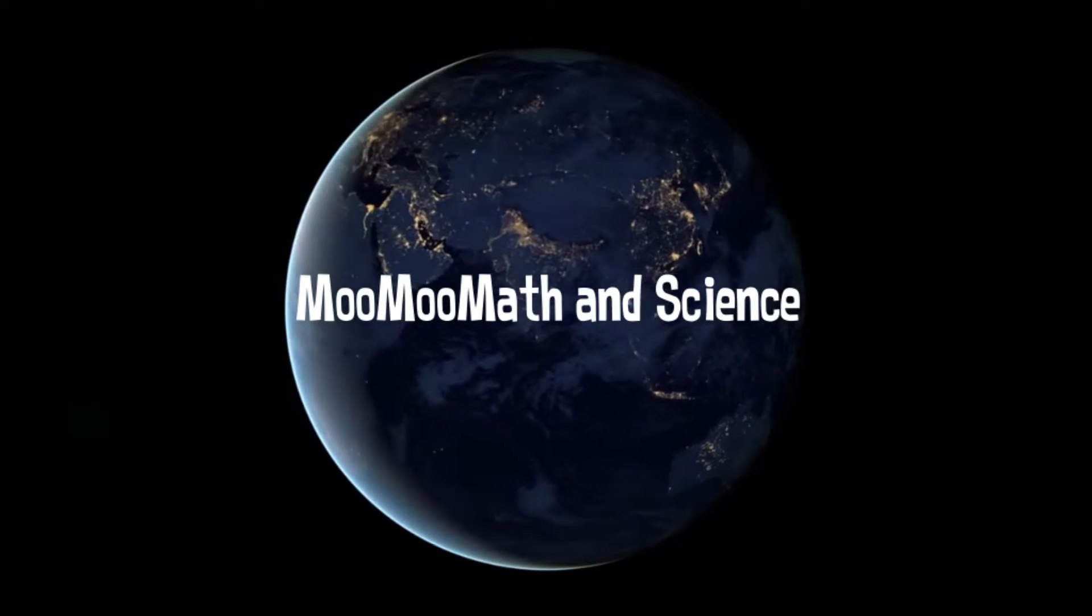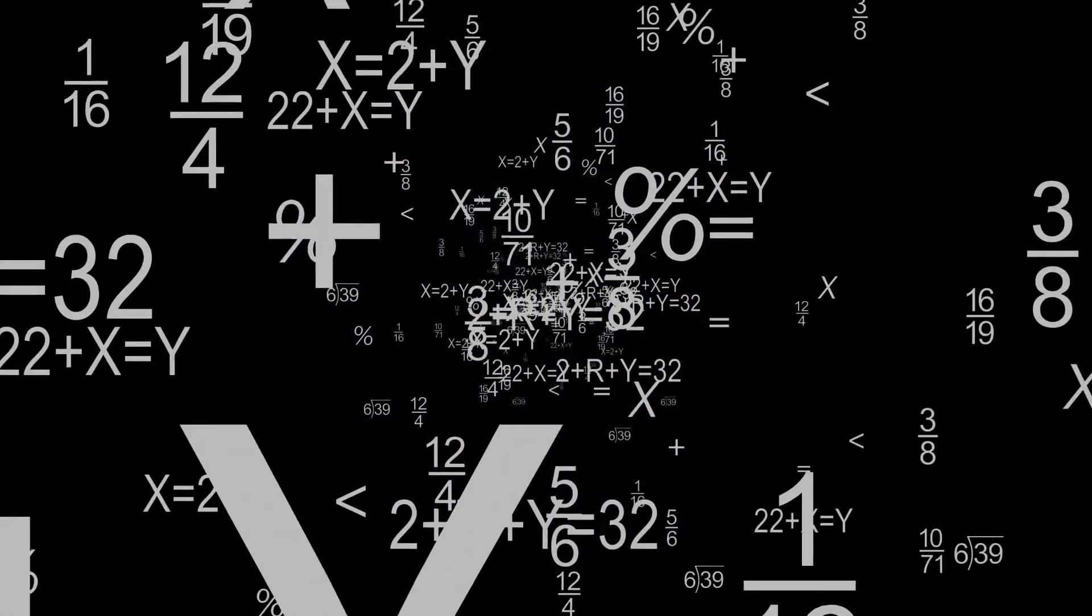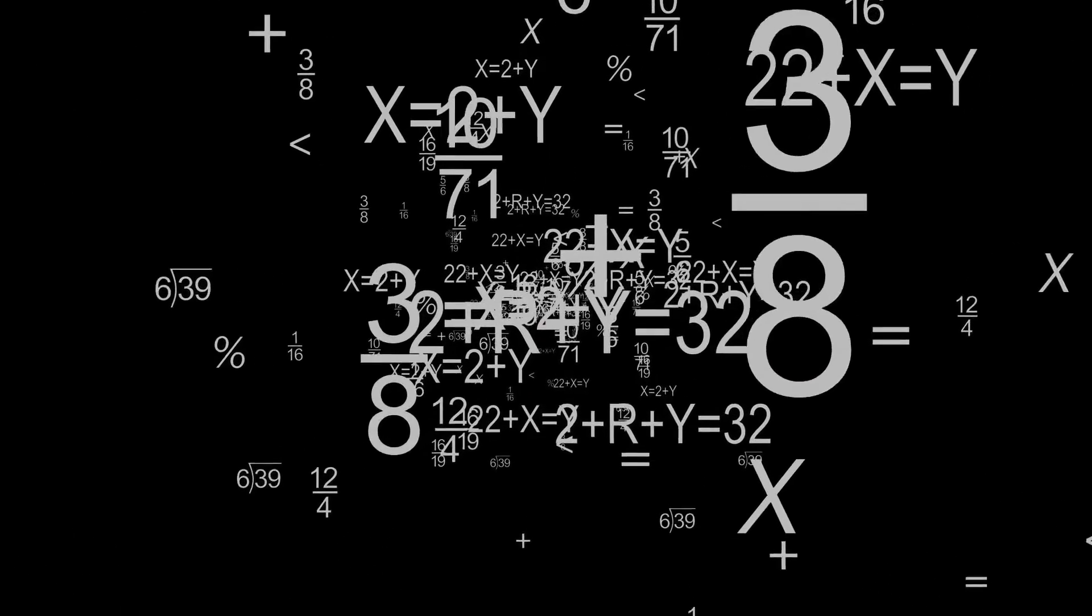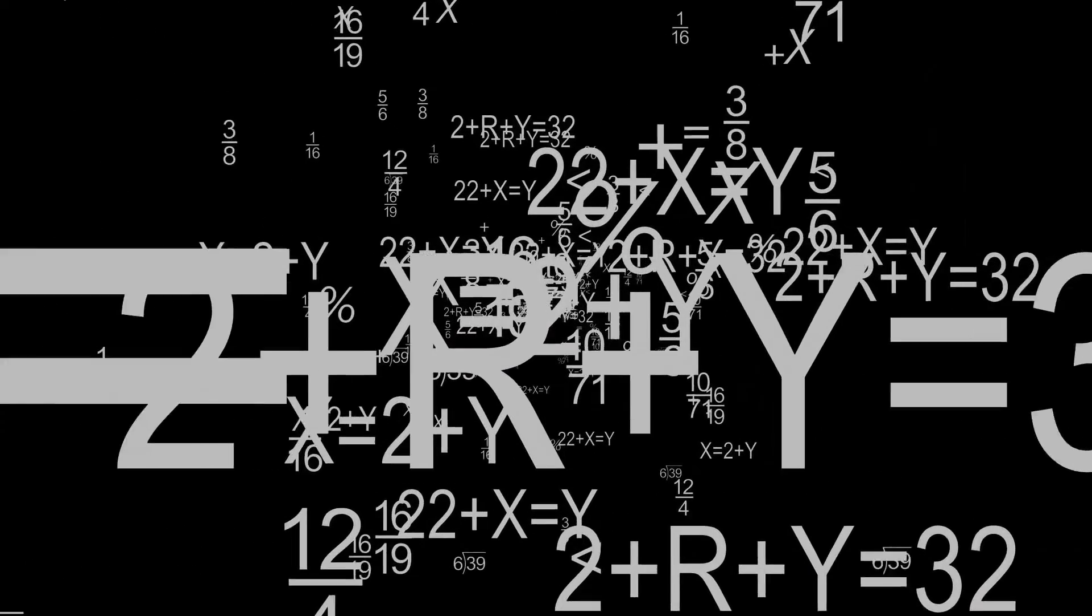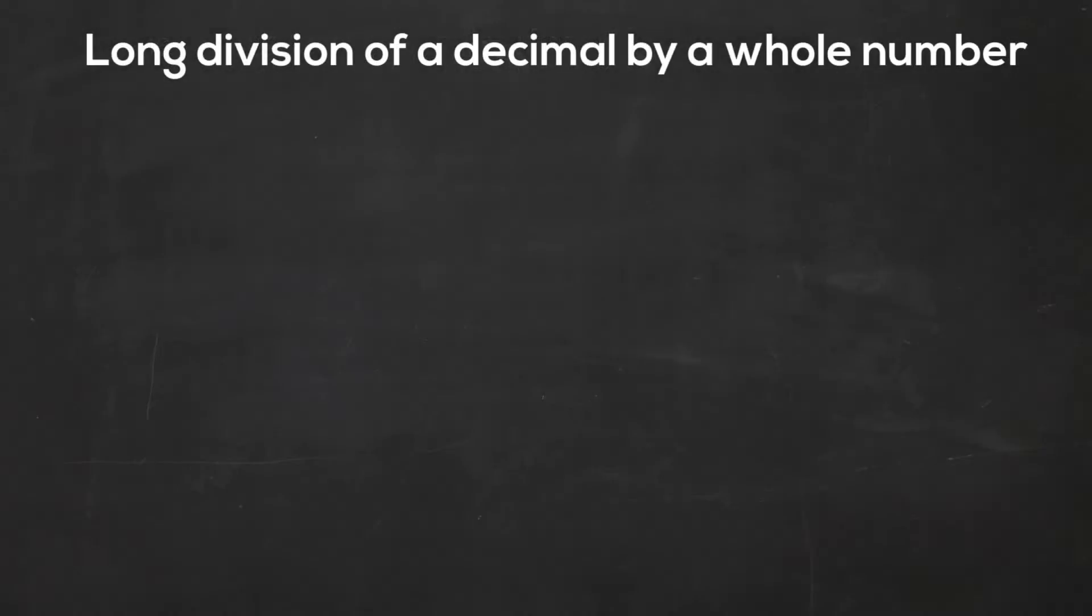Welcome to MooMooMath and Science. In this video, let's learn how to divide decimals by whole numbers using long division. The first example: 0.150 divided by 3.